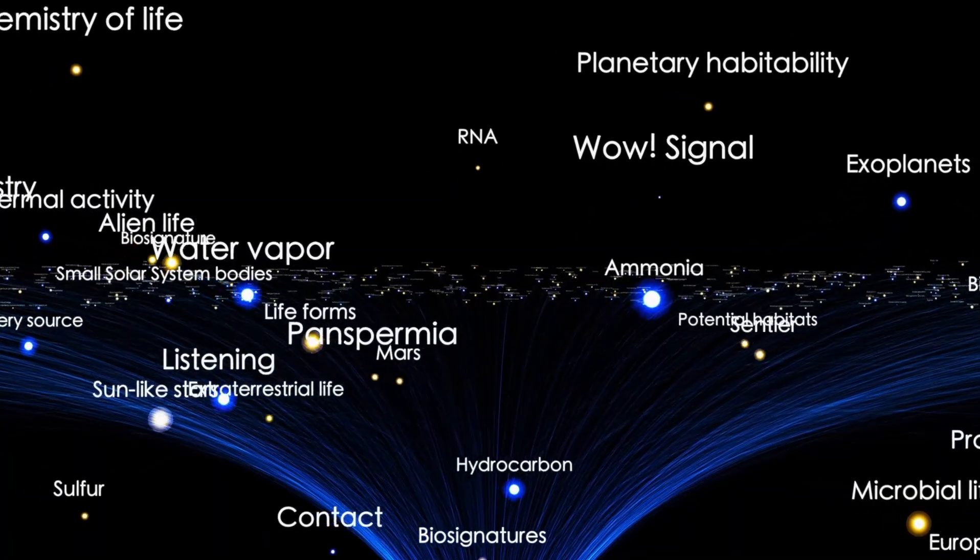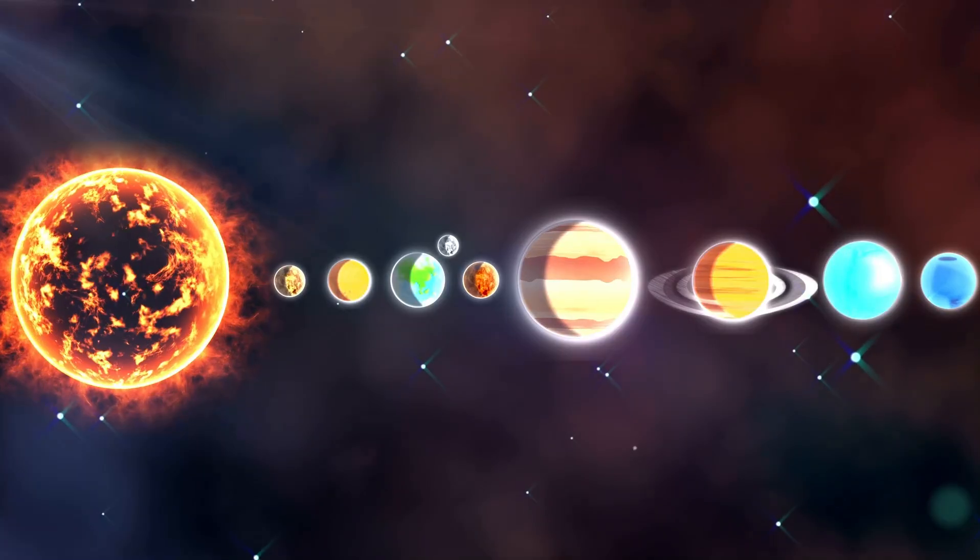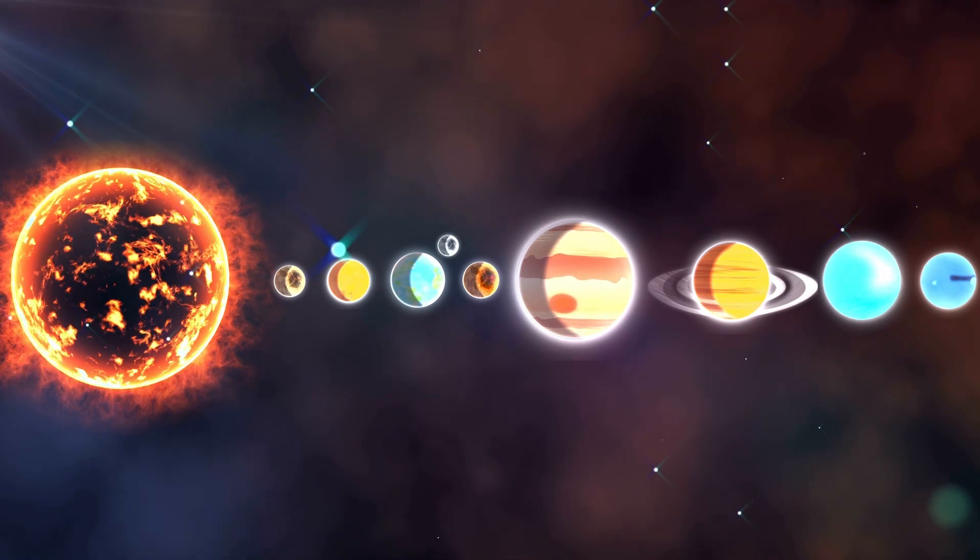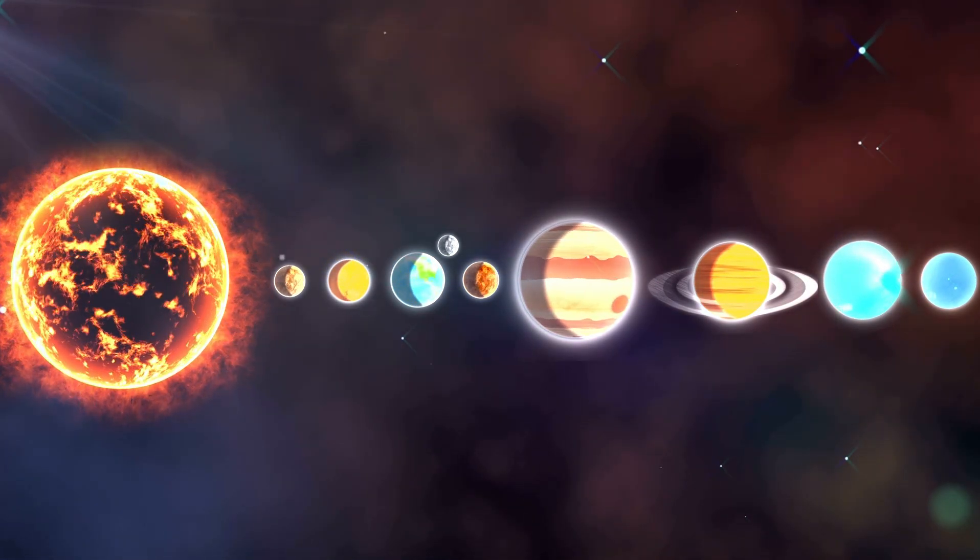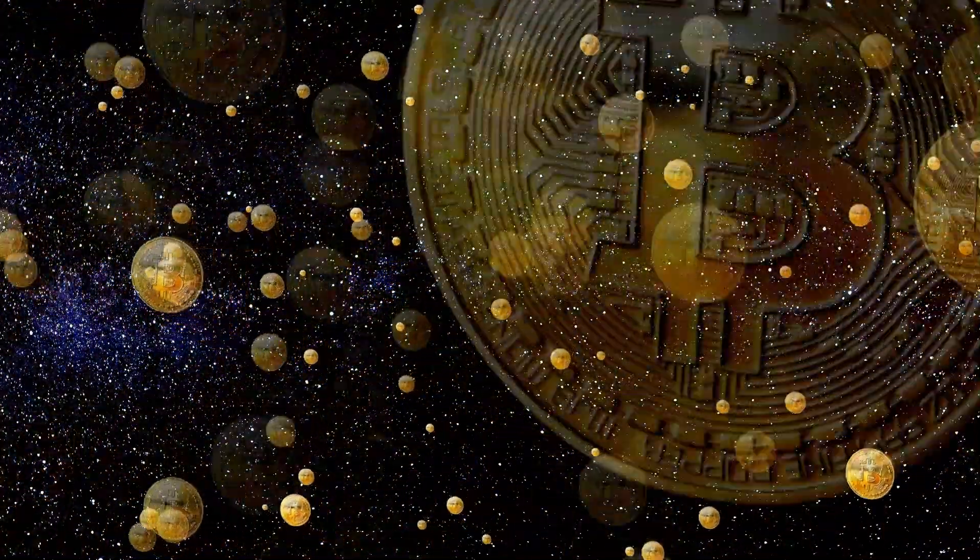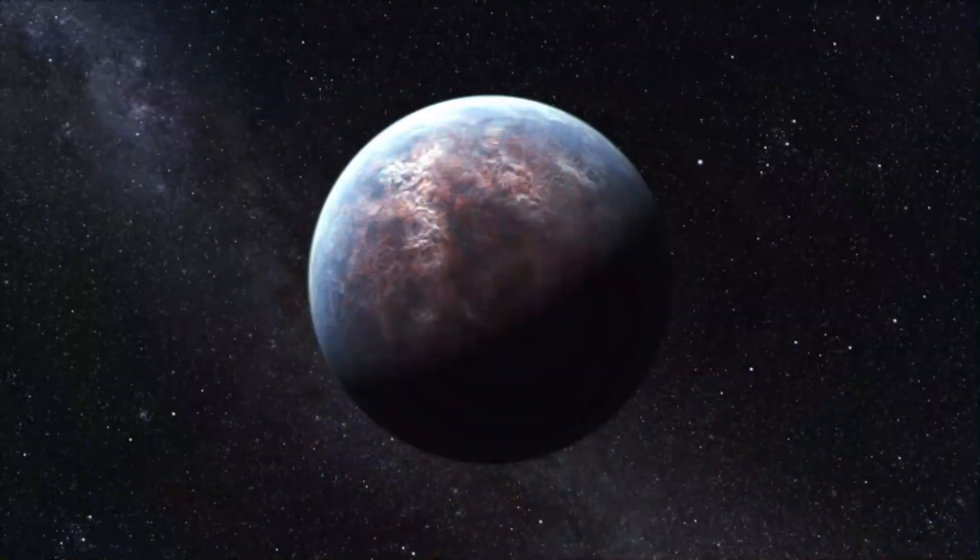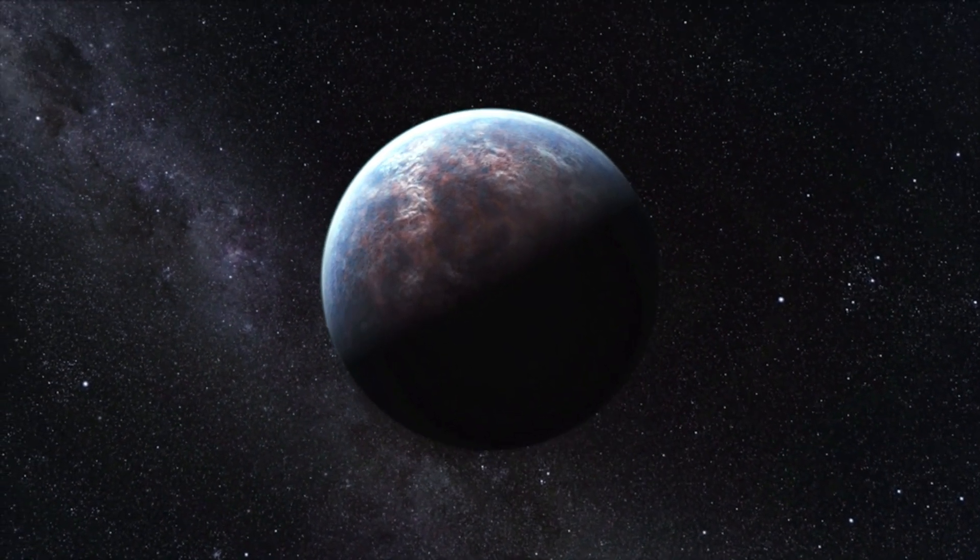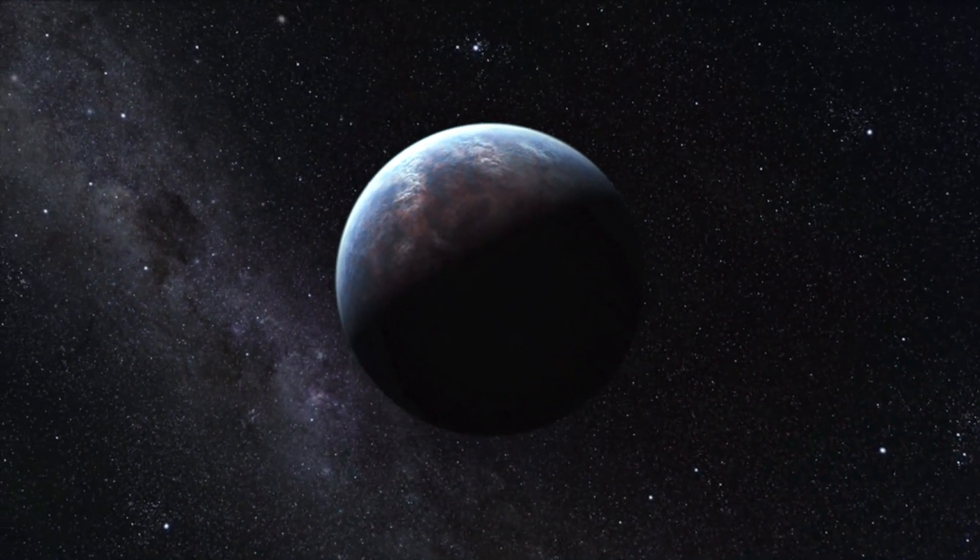As we venture beyond our own solar system, we discover a whole new world of exoplanets, planets that orbit stars other than the Sun. With 206 trillion stars in the universe, the possibilities of exoplanets are endless. Some exoplanets even roam free, untethered to any star, like rogue travelers in space. But among them all, Proxima Centauri b stands out as a truly remarkable and enigmatic planet.